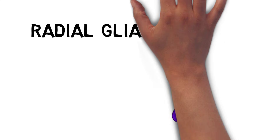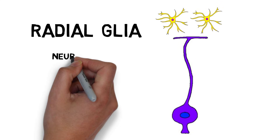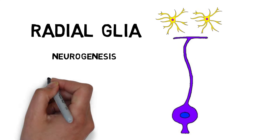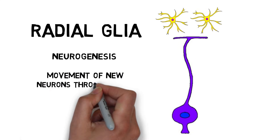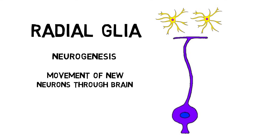Radial glia are involved in neurogenesis and neural development. They can give birth to new neurons and also serve as a scaffold along which new neurons can travel from their site of origin to their final destination in the brain.